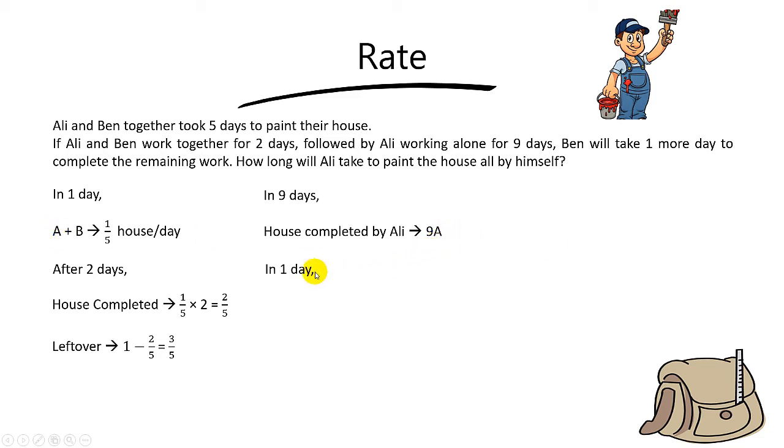And in 1 day, similarly, to find Ben, you simply take 1 out of 5 minus away A to get B. So in 1 day, the house completed by Ben will be 1 out of 5 minus A.